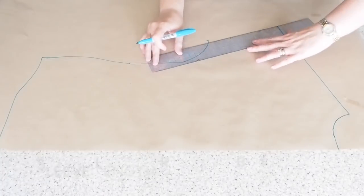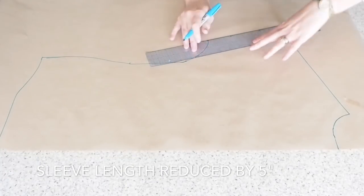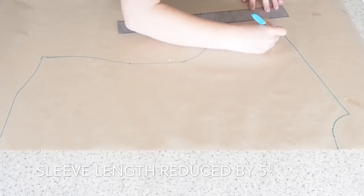And I've shortened the sleeve from the block five inches. So for my block the sleeve is elbow length and I want this to be more sort of t-shirt length. So I've taken five inches there off the sleeve.